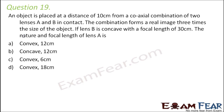Question number 19. An object is placed at a distance of 10 cm from a coaxial combination of two lenses A and B in contact. The combination forms a real image three times the size of the object. If lens B is concave with a focal length of 30 cm, the nature and focal length of lens A is to be found.